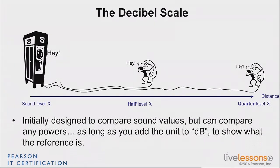The idea of reasoning in halves — or doubles — is useful in many fields. Bell Labs used the decibel scale for sound, but we use it for many other things. We just add another unit after 'decibel' to indicate what we're measuring. For example, decibel-volts, or for watts and milliwatts, we use dBm — a value we use a lot.